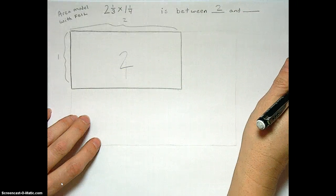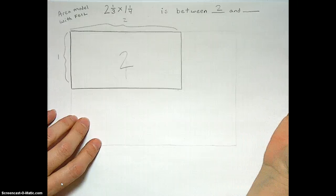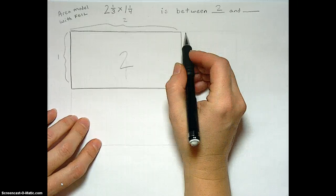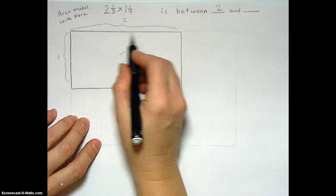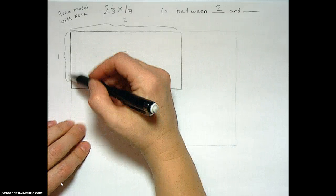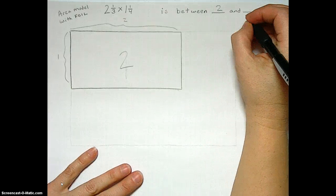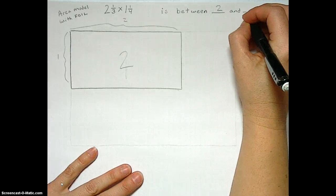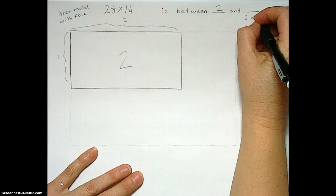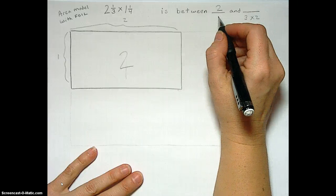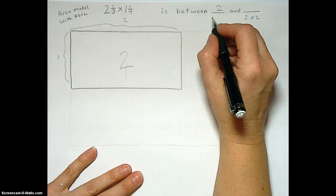And then it has to be smaller than the next biggest number for each. So it has to be smaller than 3 by 2. Here we just used the whole number part of the mixed numbers, 2 times 1.